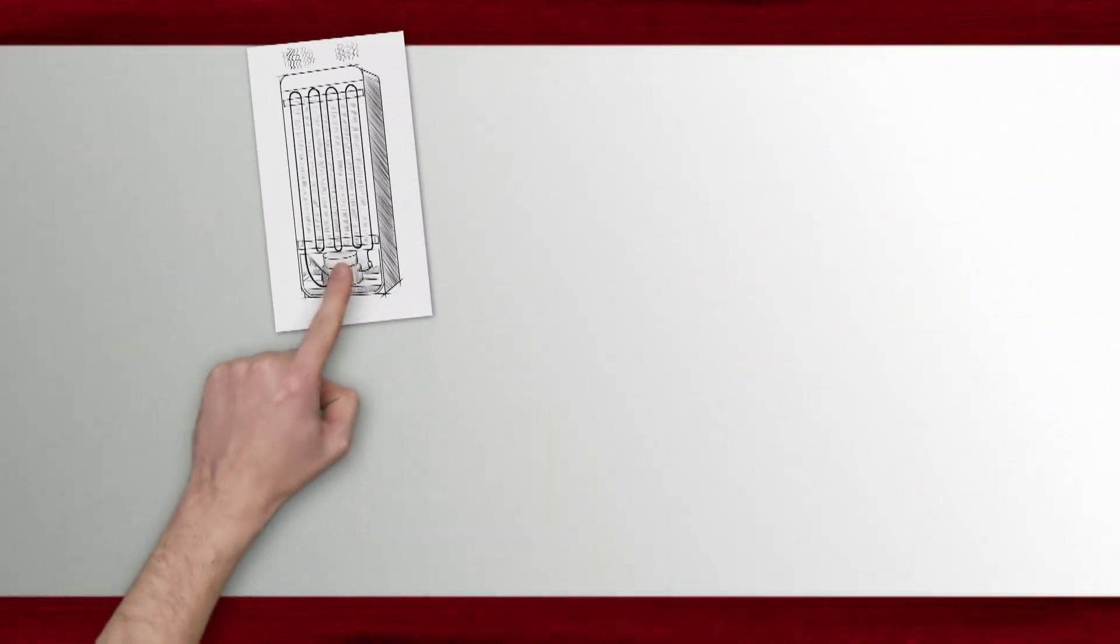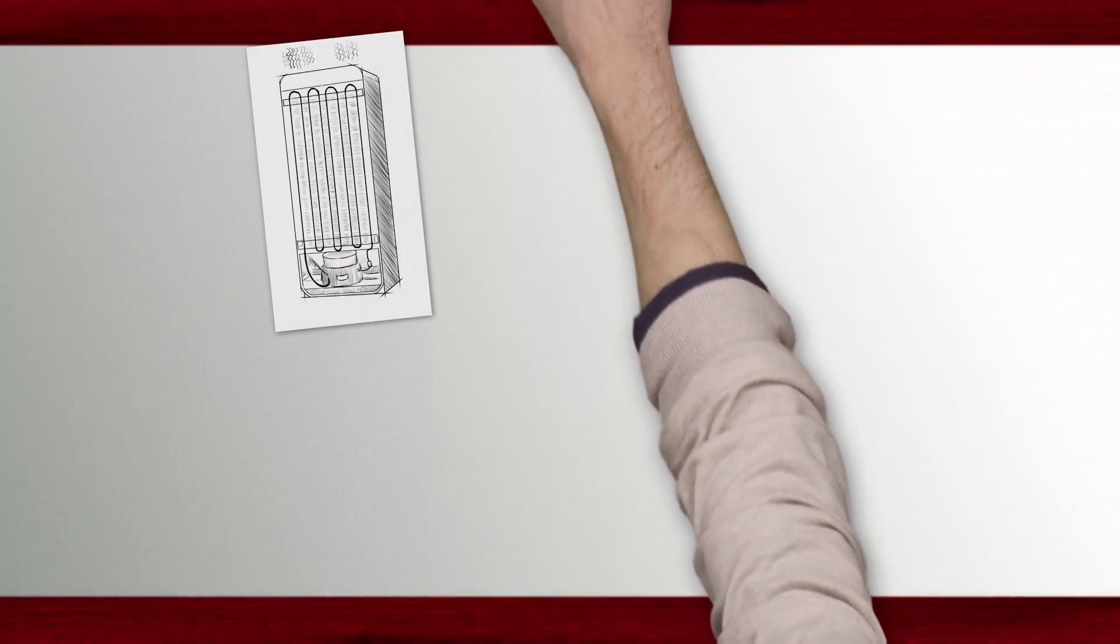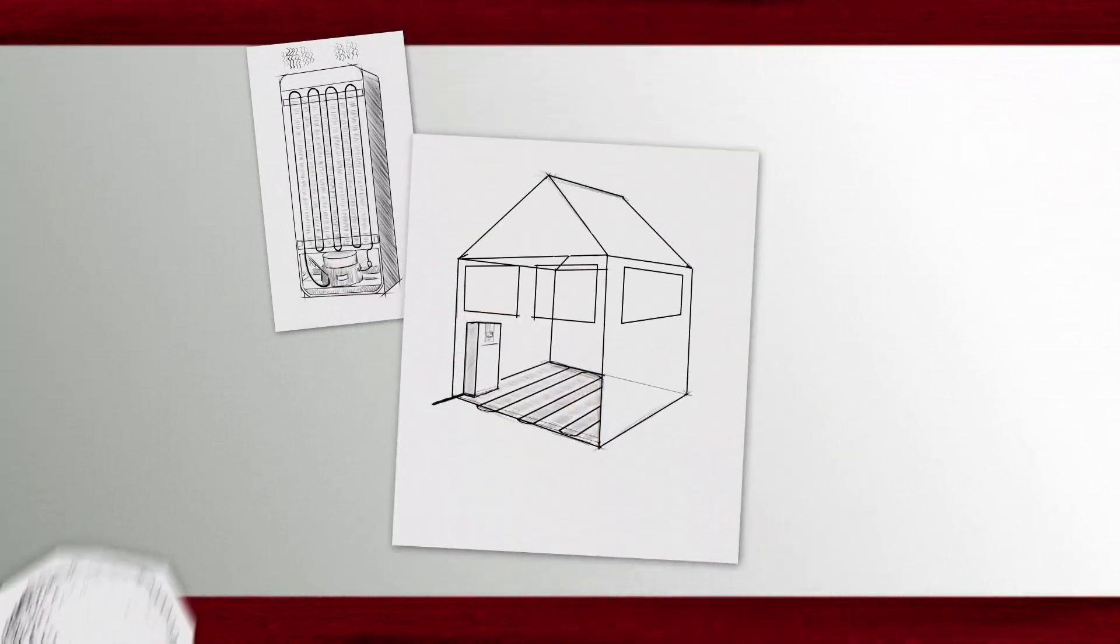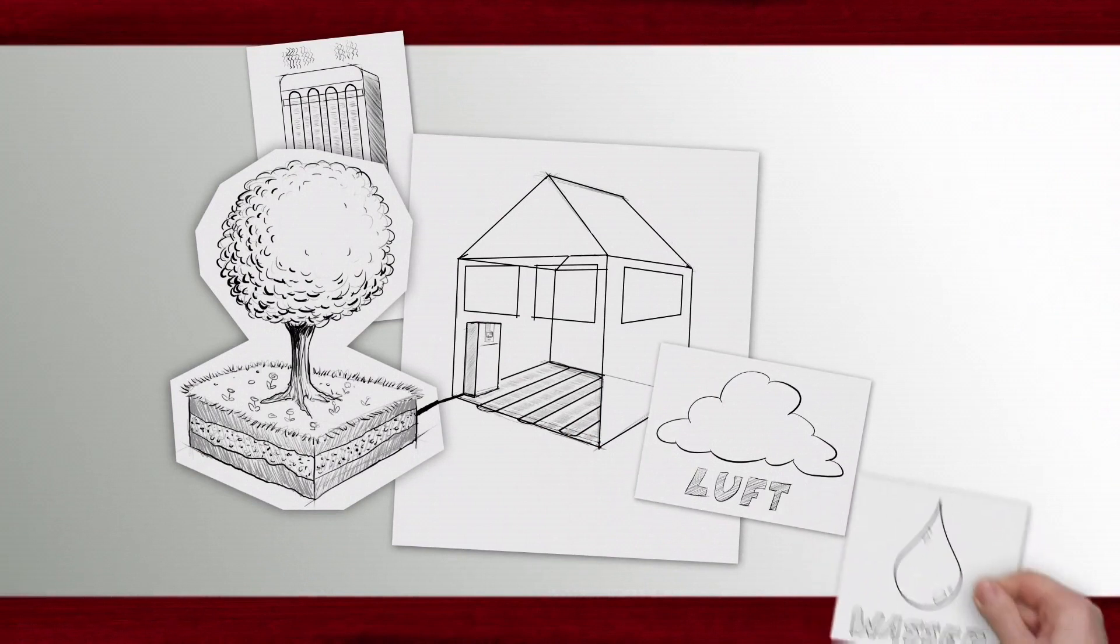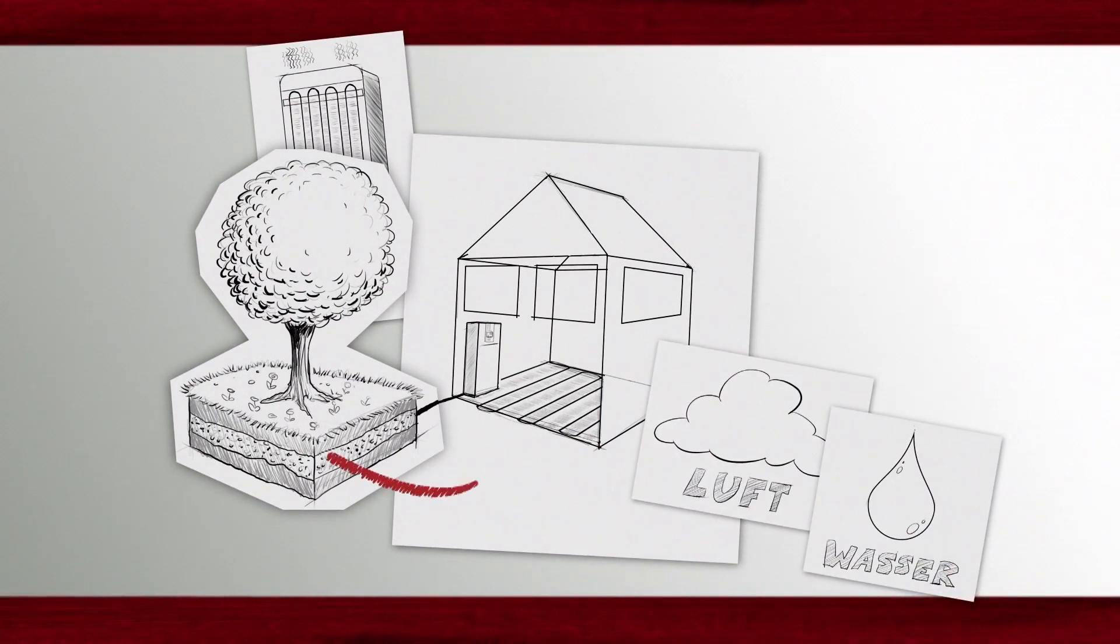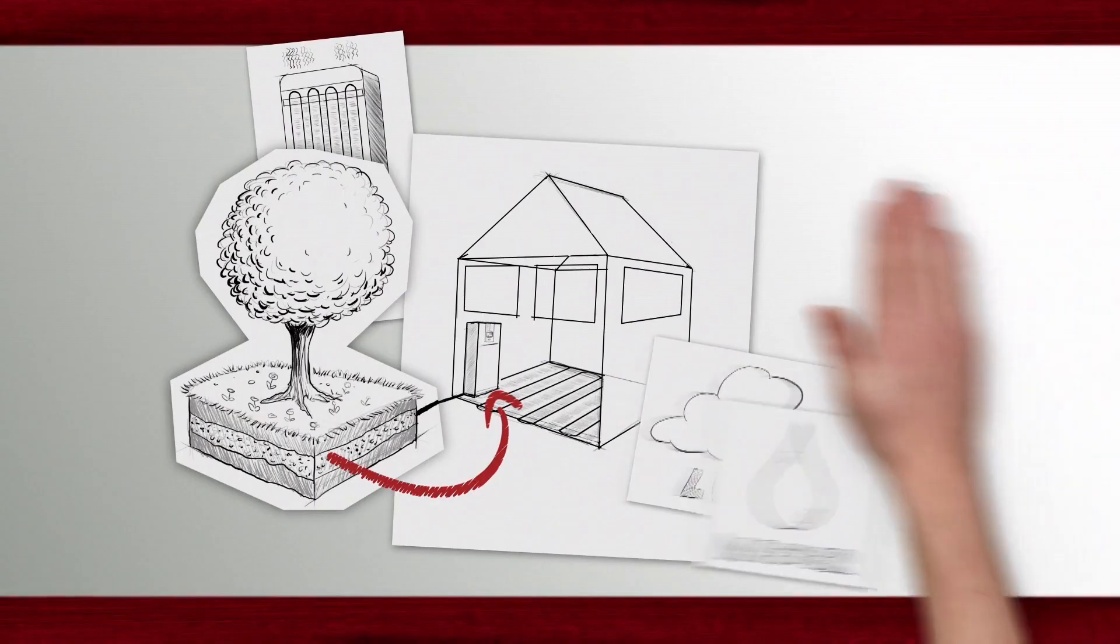Now imagine that the heat exchanger is underfloor heating and the heat pump removes stored solar energy from the soil, the air or the groundwater and transmits it to the heating system in the house. So quite simple.